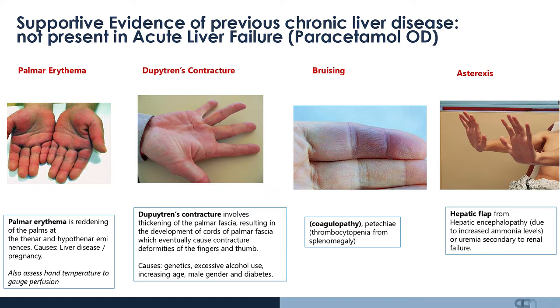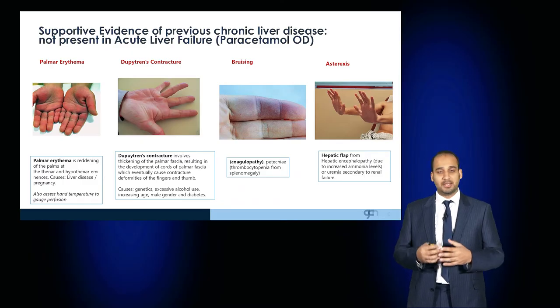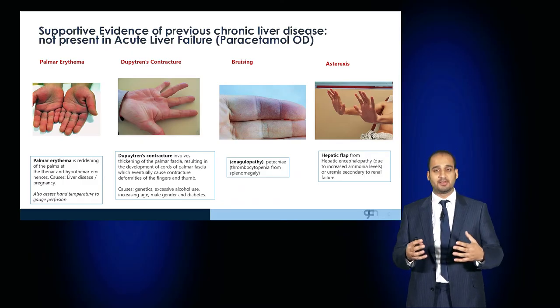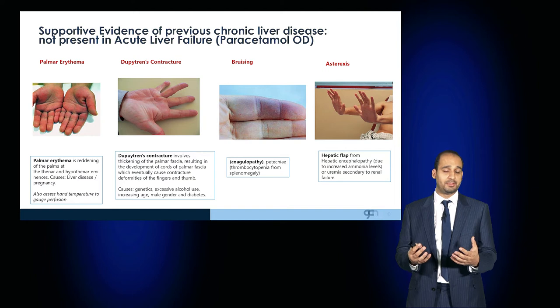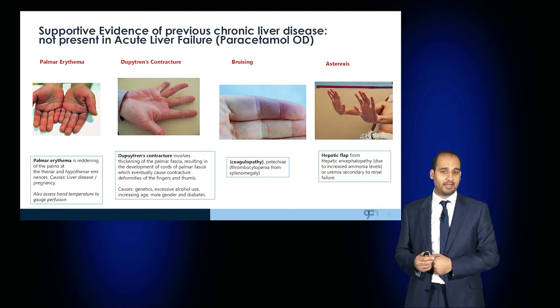If the patient had an acute intoxication due to paracetamol overdose, these signs may not manifest, and the patient may just have developed encephalopathy and asterixis and rapidly developed liver failure.